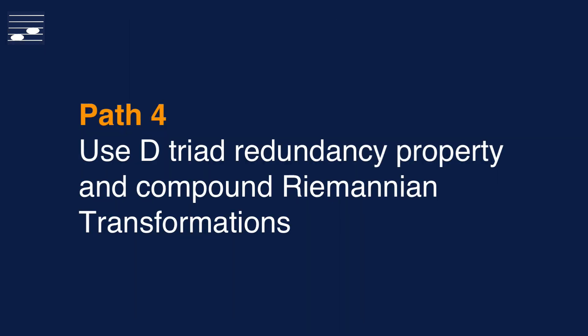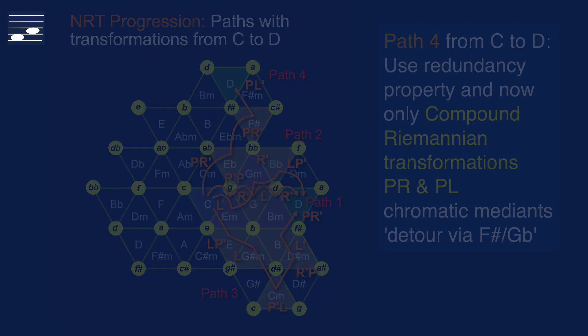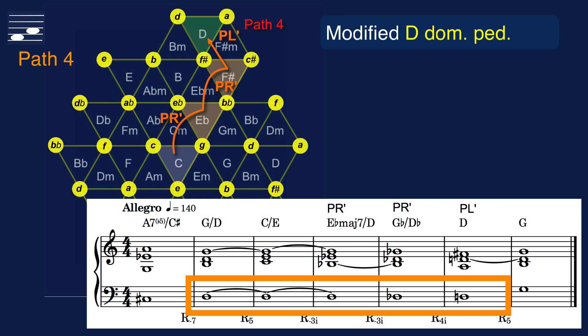Path 4 will demonstrate another option that is based on the redundant occurrence of the target chord, while using compound Riemannian transformations only. As the Tornetz diagram shows, we approach the alternative D major triad at the top with a set of PR and PL transformations. The chromatic medians keep moving in the north-east direction until we reach the F-sharp major triad. The remote triad F-sharp major, or equivalently G-flat major in second inversion position, requires modification of the base part.